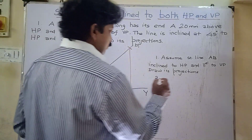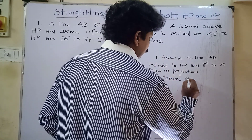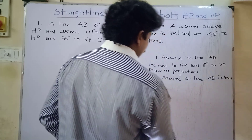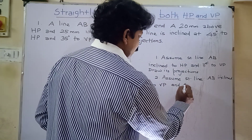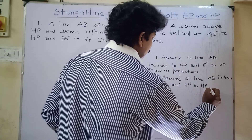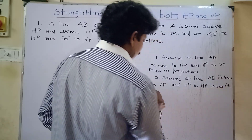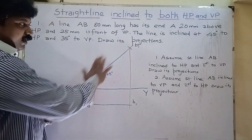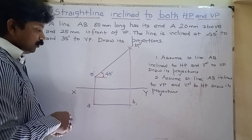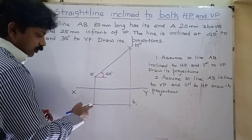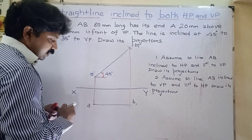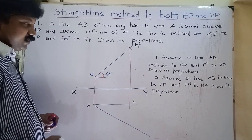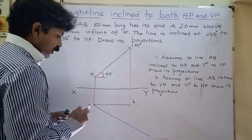Second step: assume the straight line AB inclined to VP and parallel to HP. Draw its projections. For inclination to VP, with point A as center, fix the protractor and take 35 degree inclination. Draw a line at 35 degree inclination in the top view.